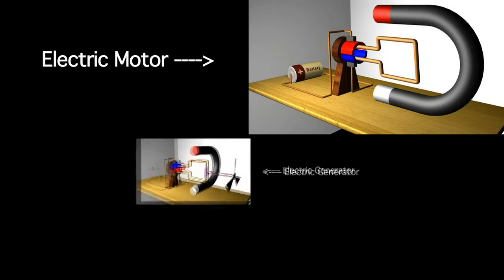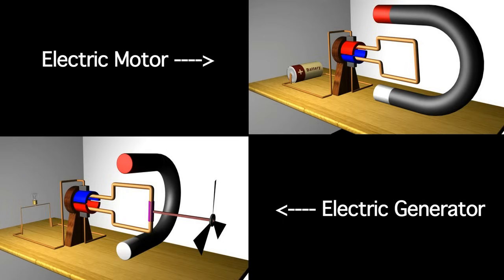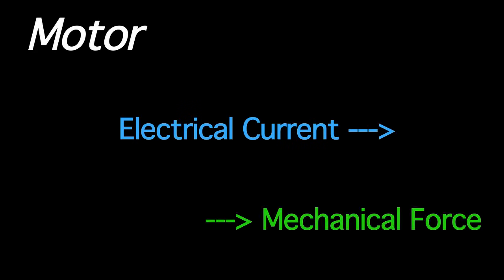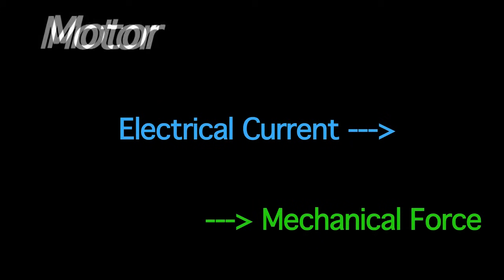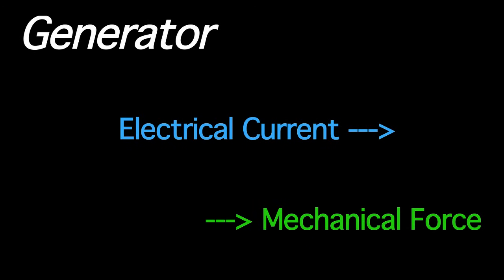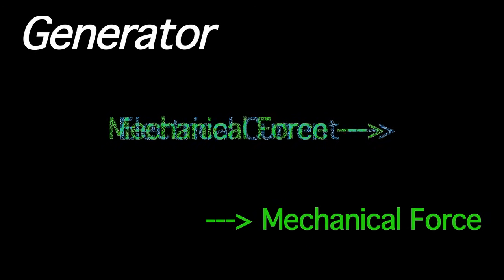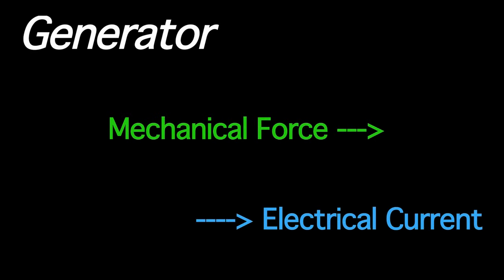The electric motor and the electric generator are related like two sides of a coin. In general, the task of an electric motor is to convert electrical current into mechanical force. On the other hand, an electrical generator converts mechanical force into electrical current.